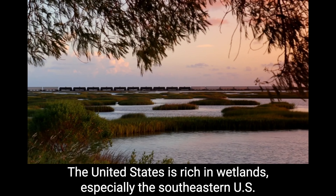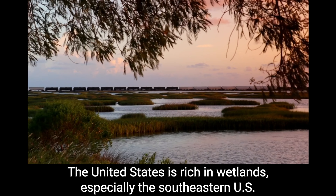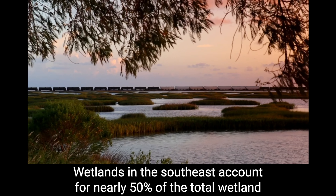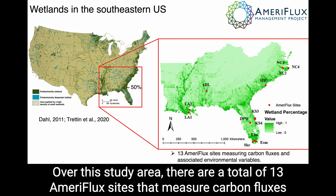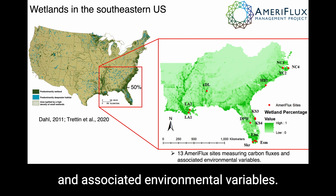The United States is rich in wetlands, especially the southeastern U.S. Wetlands in the southeast account for nearly 50% of the total wetland areas in the contiguous U.S. Over the study area, there are a total of 13 AmeriFlux sites that measure carbon fluxes and associated environmental variables.